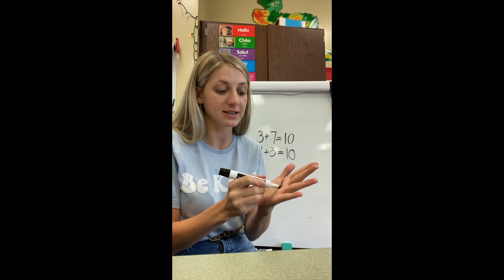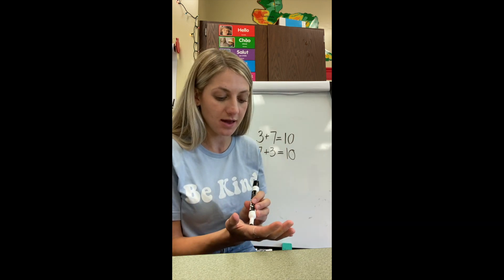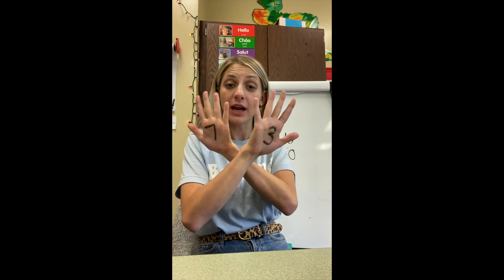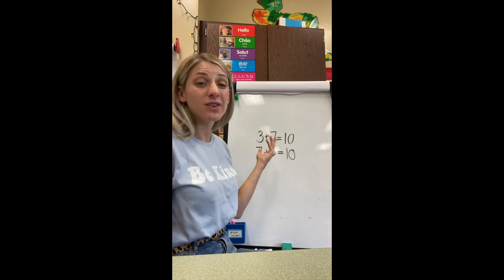I had the seven and the three. Seven and three. If I have seven over here and three over here, I have 10 altogether. If I switch them and I have seven over here and three over here, I still have 10 altogether. That is commutative property. It's when you switch the parts and you still have the same amount.